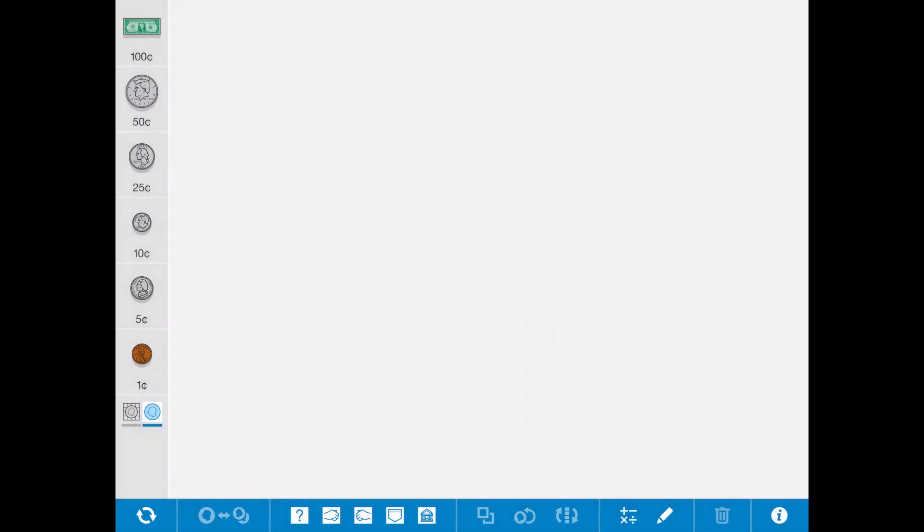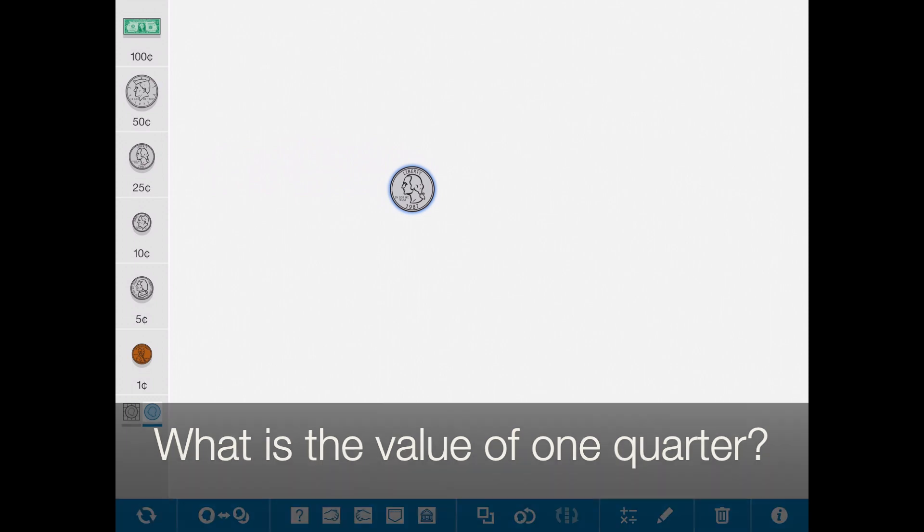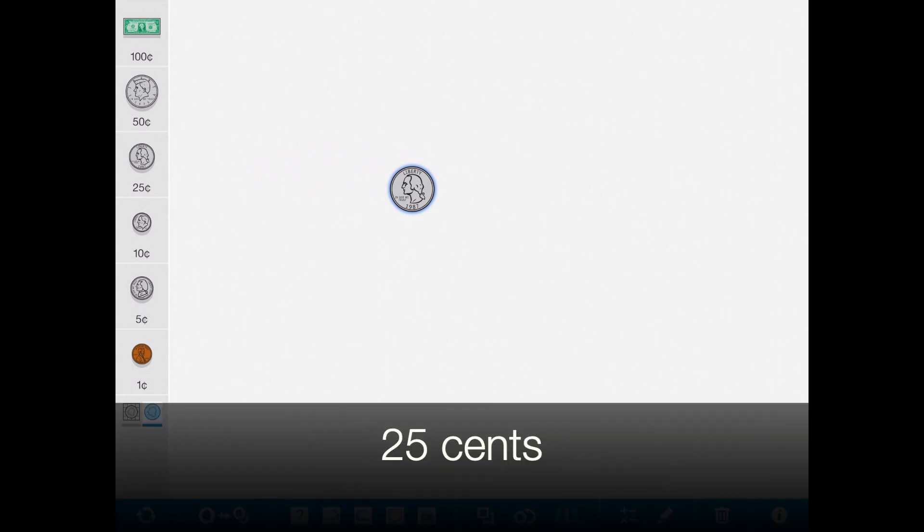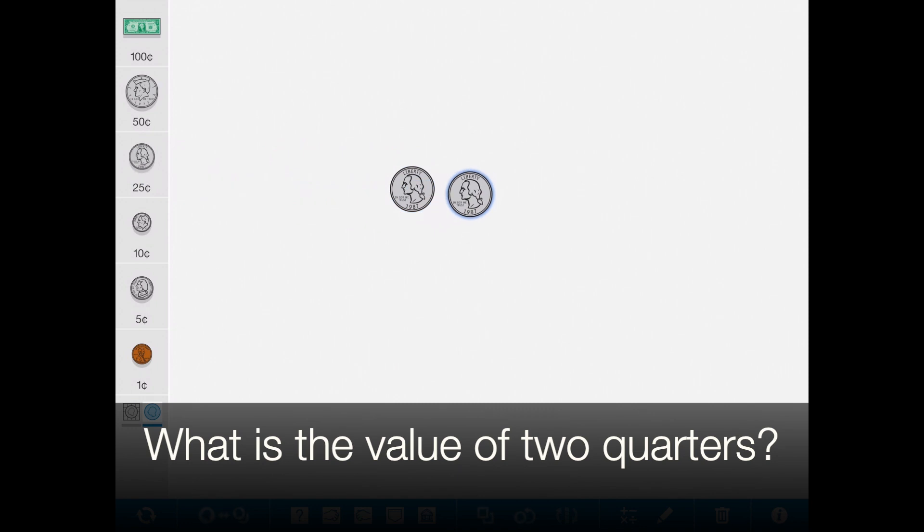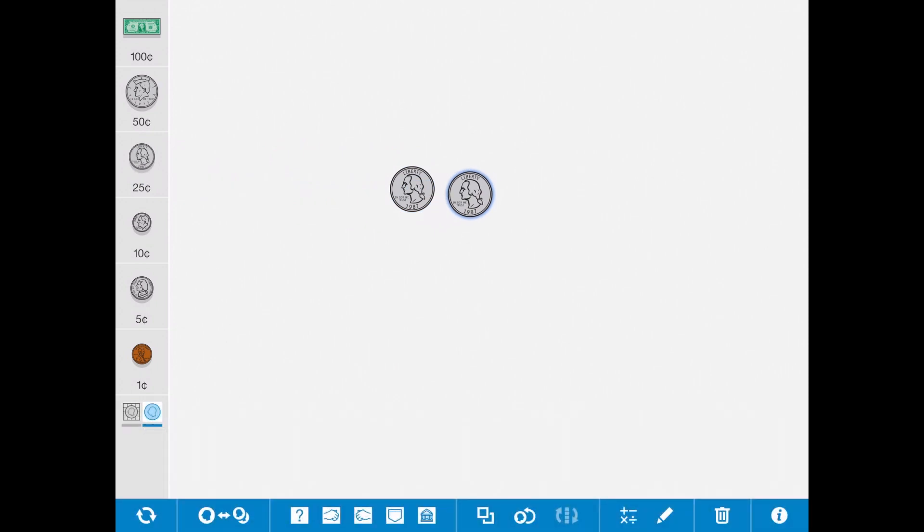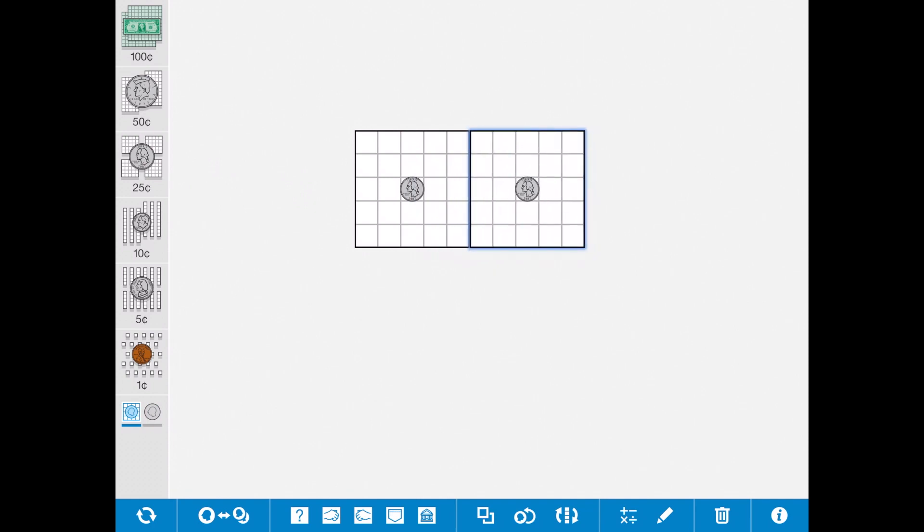All right, again, starting over this time, we're going to be grabbing some quarters. So again, what is the value of one quarter? Twenty-five cents. What about if I grab two quarters? I'm going to show this with the grid as a reminder. Okay, with the quarter, you can see that there are five rows of five. It's five, ten, fifteen, twenty, twenty-five.